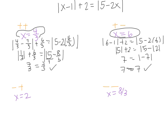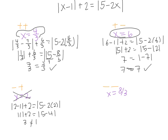Plugging in x equals 2: the absolute value of 2 minus 1 plus 2 is equal to the absolute value of 5 minus 2 times 2. So 2 minus 1 is 1, plus 2 gives me 3. And the absolute value of 5 minus 4 is 1. Those are not equal, so x equals 2 is an extraneous solution — it does not work.